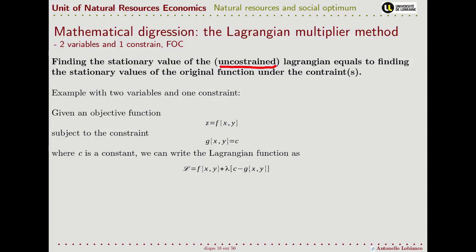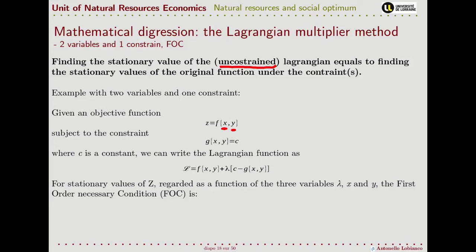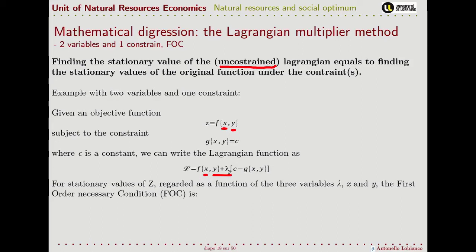For example, for two variables and one constraint, we have one generic objective function that depends on x and y, and we have a single constraint. At that point we can write our Lagrangian as our original function plus the Lagrange multiplier multiplying the constraint. To find the stationary values of our original constrained function, we simply take the first-order conditions over these three variables: our original two variables x and y, plus our new dummy variable lambda.